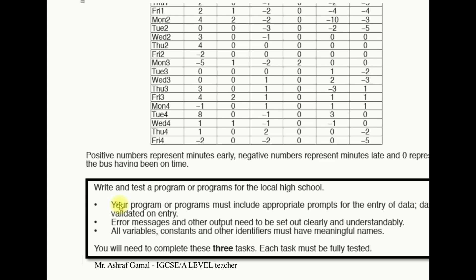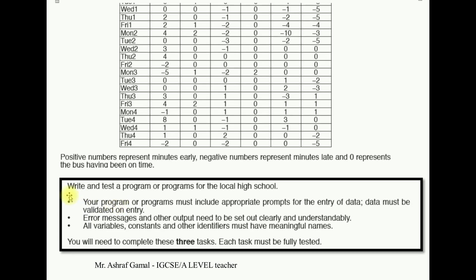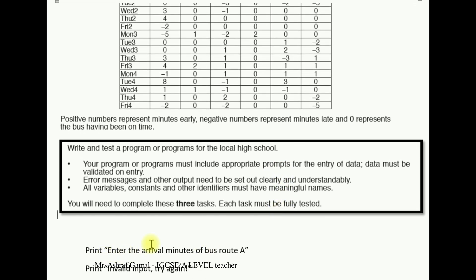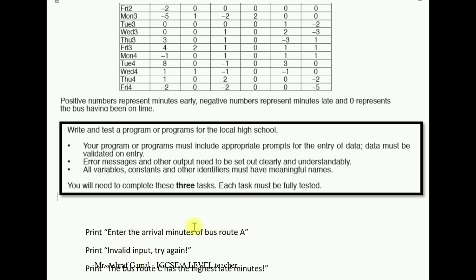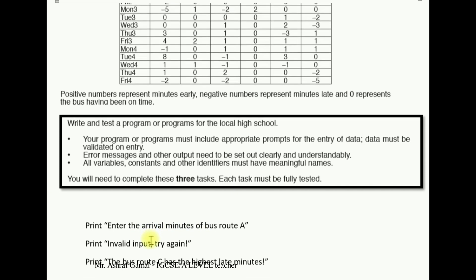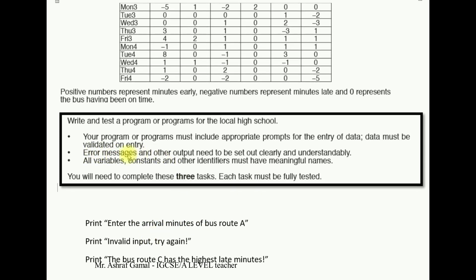Whenever you solve the pseudocode for the pre-release material, you need to take care of three important bullet points. First, your program must include appropriate prompts. A prompt could be like printing a message to the user, for example prompting them to input the arrival minutes for a bus route. Also, error messages need to be clear and understandable — for example, printing 'Invalid input. Try again.' whenever the input is inappropriate.